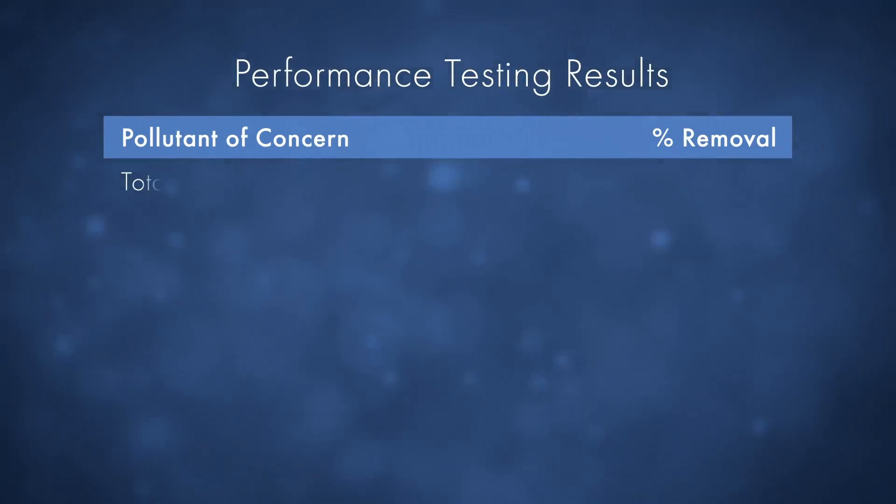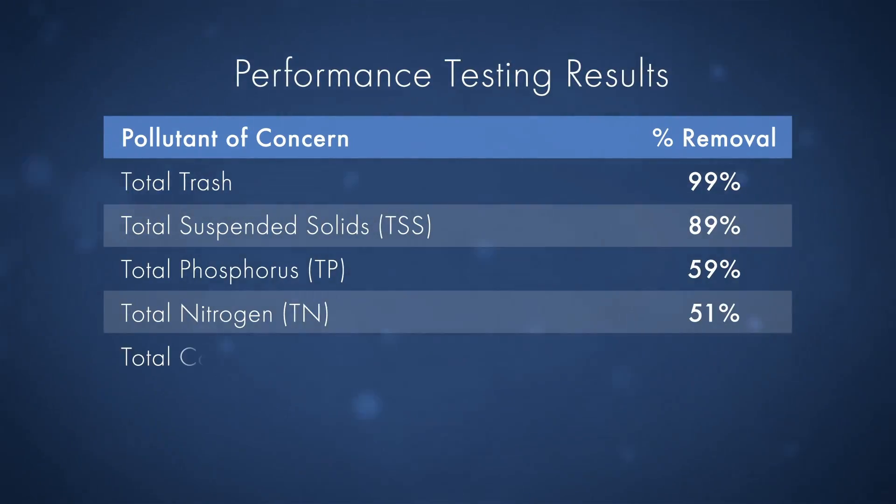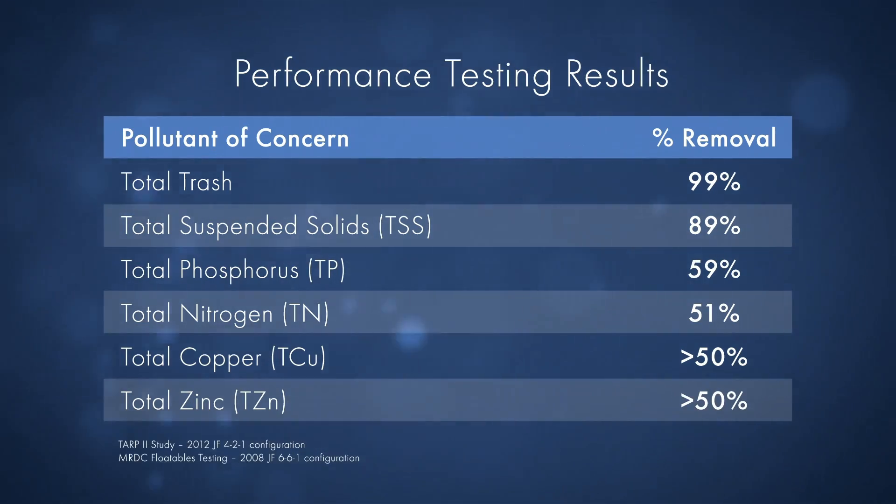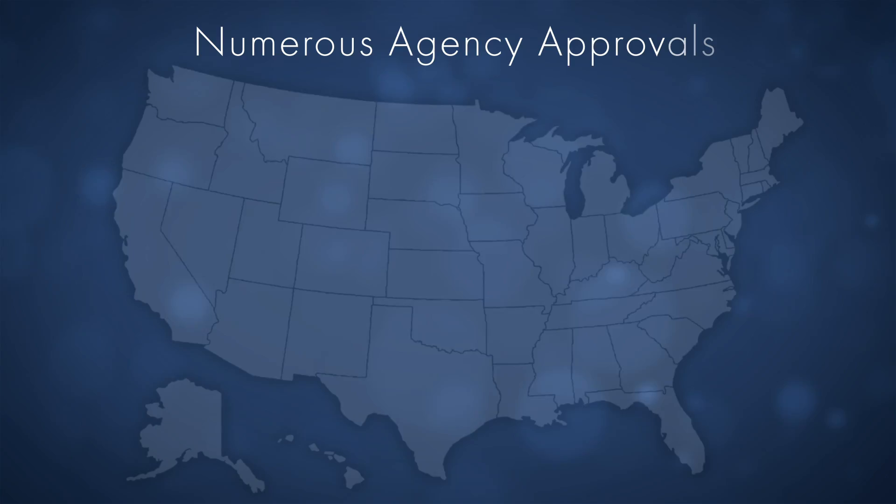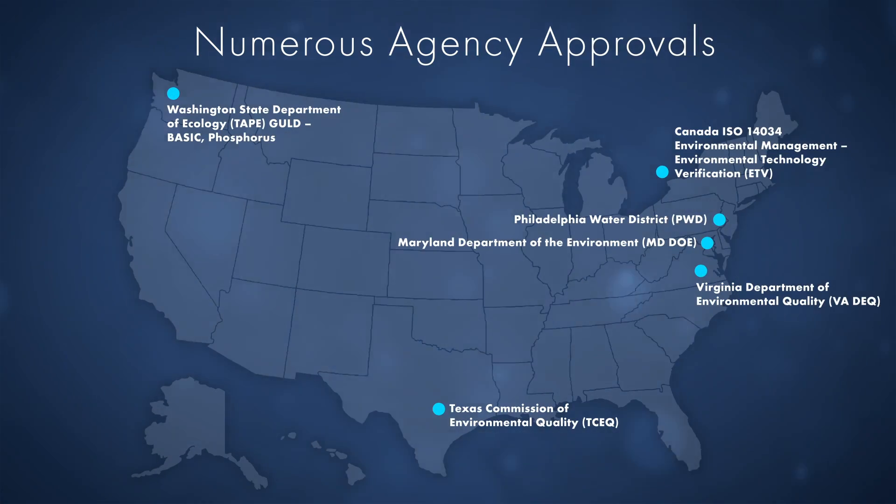Third-party field testing for the Jellyfish Filter has been conducted following the TARP Tier 2 protocol. The Jellyfish Filter has achieved numerous agency approvals, including the Washington State Department of Ecology and the Canadian Environmental Technology Verification Program.